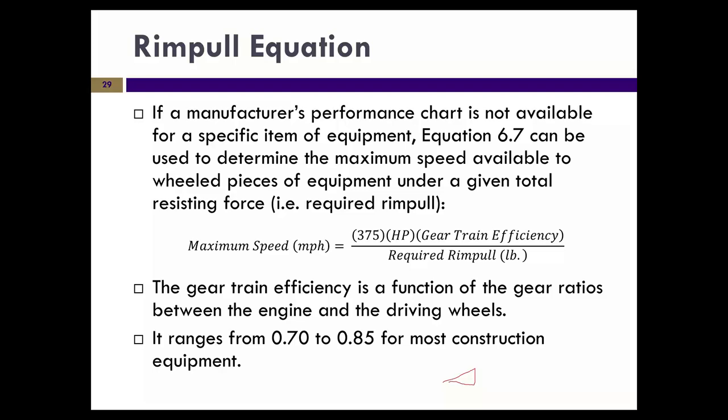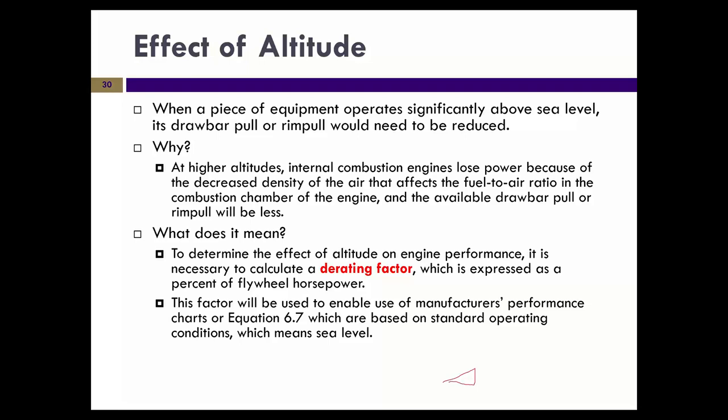If you don't have manufacturer information, you can estimate maximum speed using the formula: 375 multiplied by flywheel horsepower, multiplied by gear train efficiency, divided by required rim pull. Gear train efficiency is typically between 0.70 and 0.85. There are very few pieces of equipment where you would need to apply this, and we'll provide the curves as we go along.